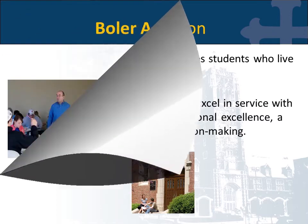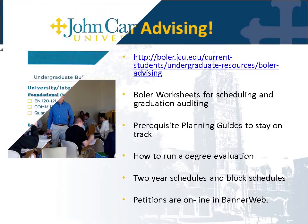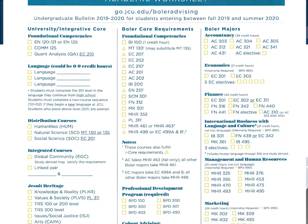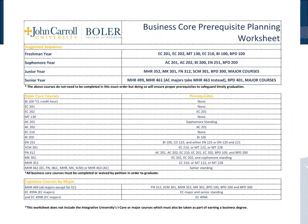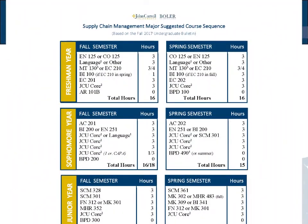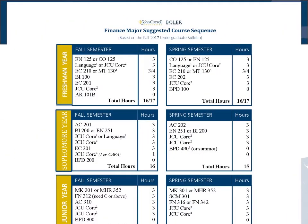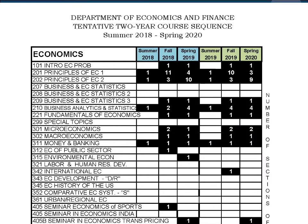The most important resource you'll have at your disposal is the Bowler Advising page listed here. On this site, you will see Bowler College worksheets, prerequisite planning guides, block schedules for each major, and two-year schedules so that you can see the timing of course offerings, as well as directions for running degree evaluations.